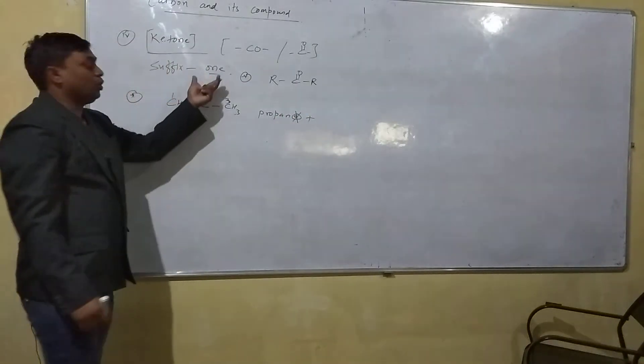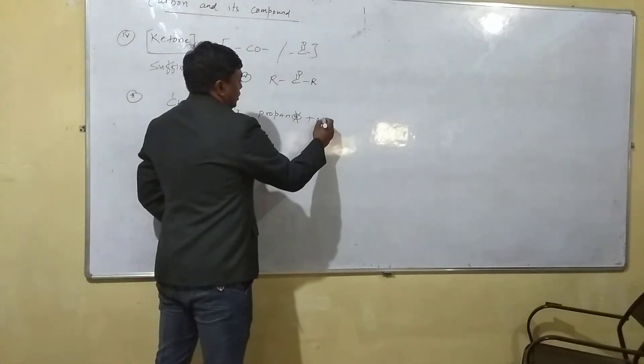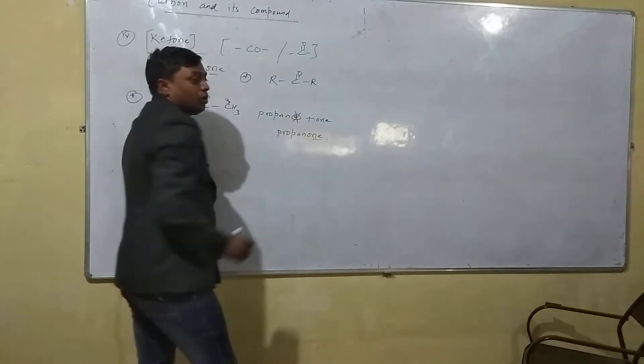In this, you have to use the suffix O-N-E, -one. So this will be propane plus -one. So this will be propanone. What is this? Propanone.